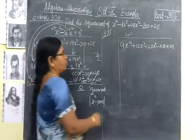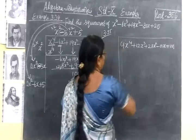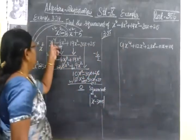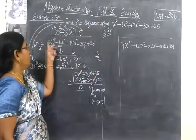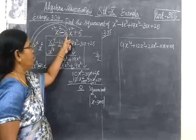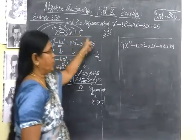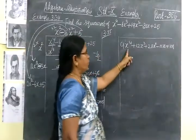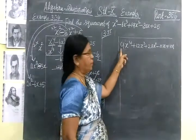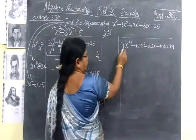Since the remainder is 0, the square root is equal to the modulus of x square minus 3x plus 5. Now come to the next one. Here the coefficient of x power 4 is 1, so you can write the answer directly. But here the coefficient of x power 4 is 9, so we use the diagram method.